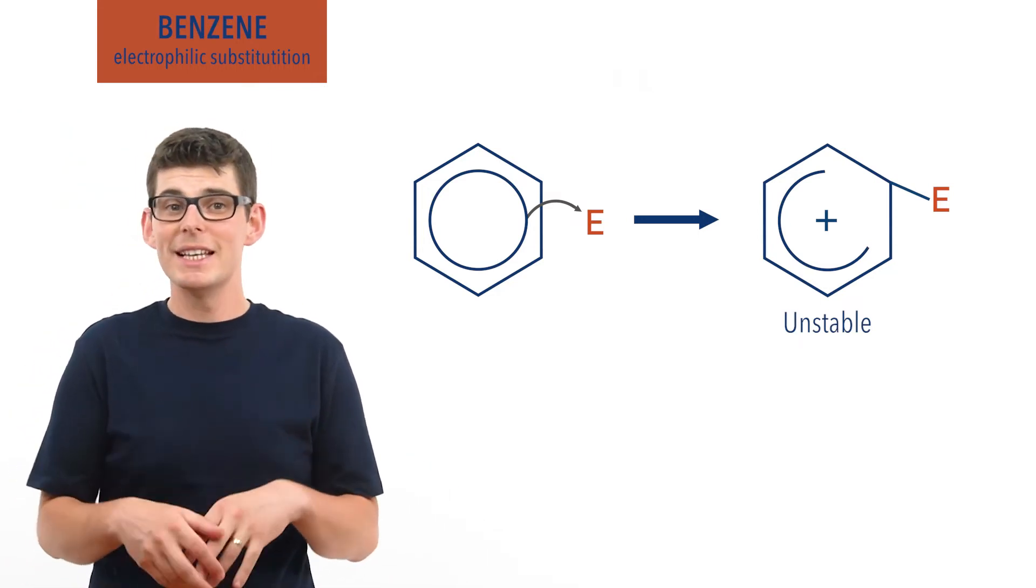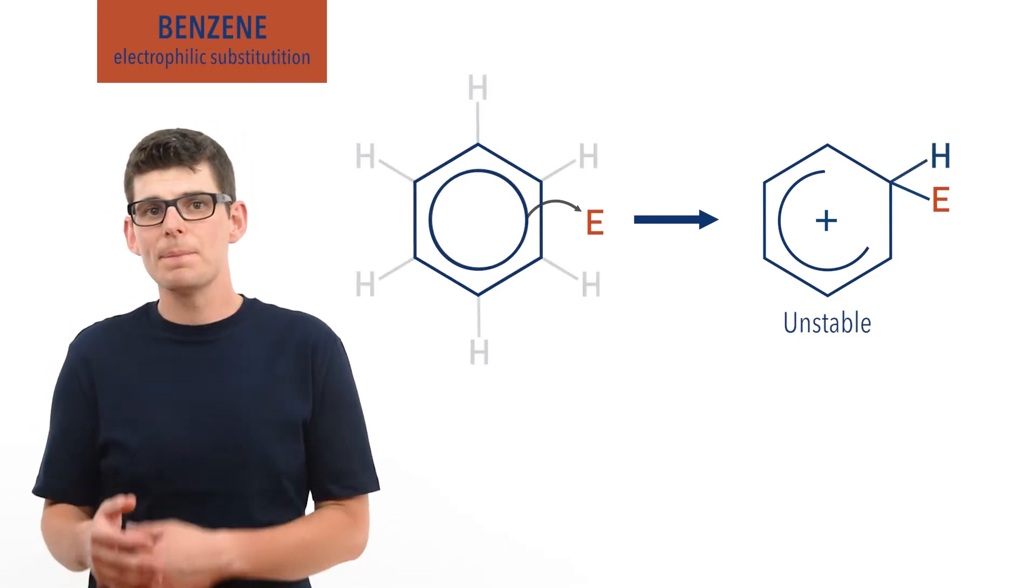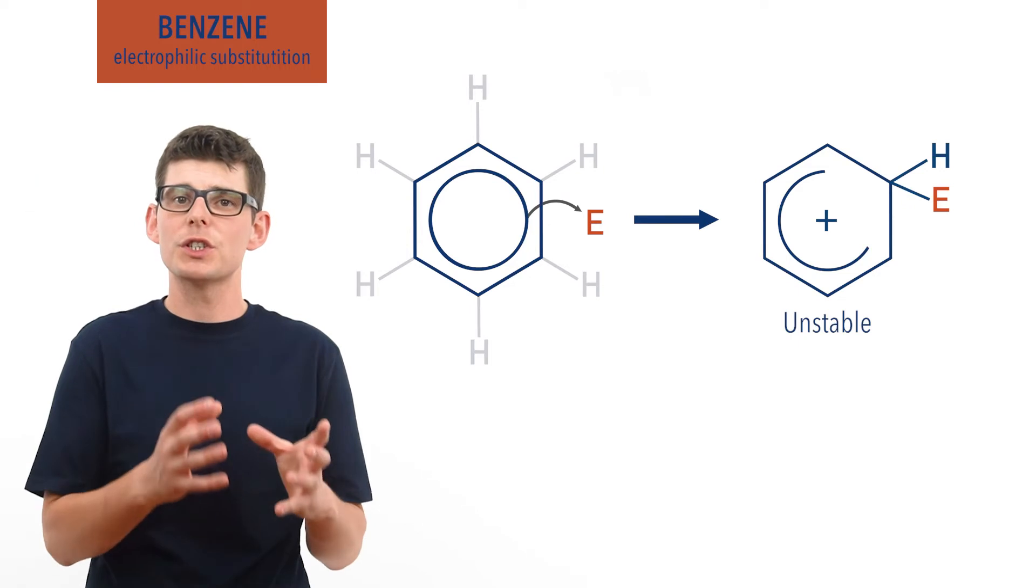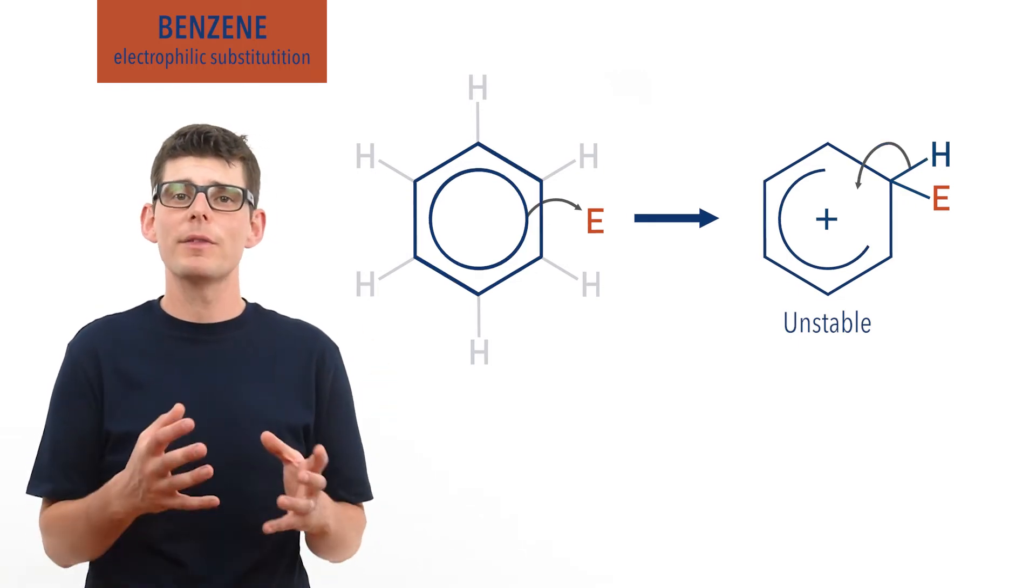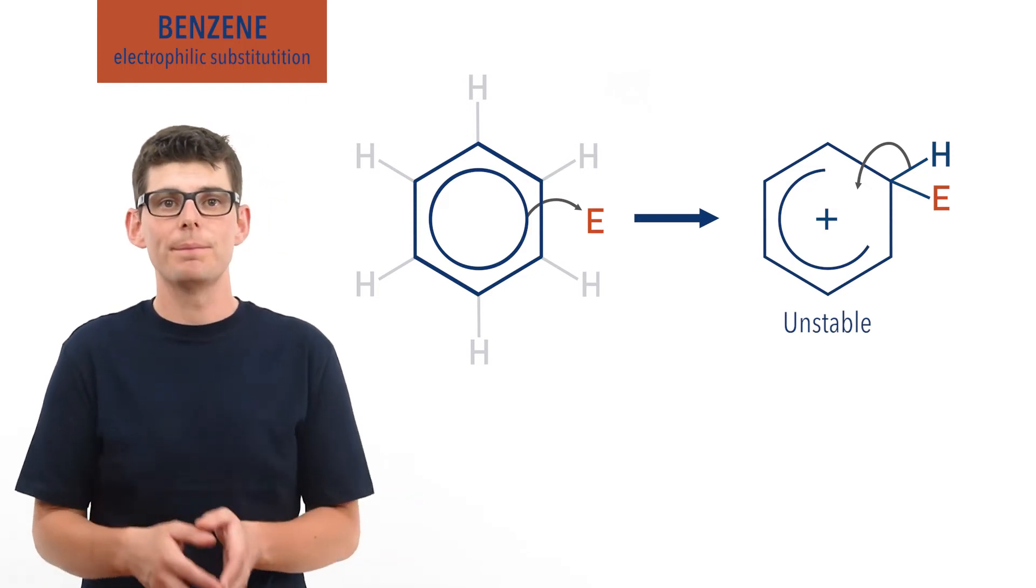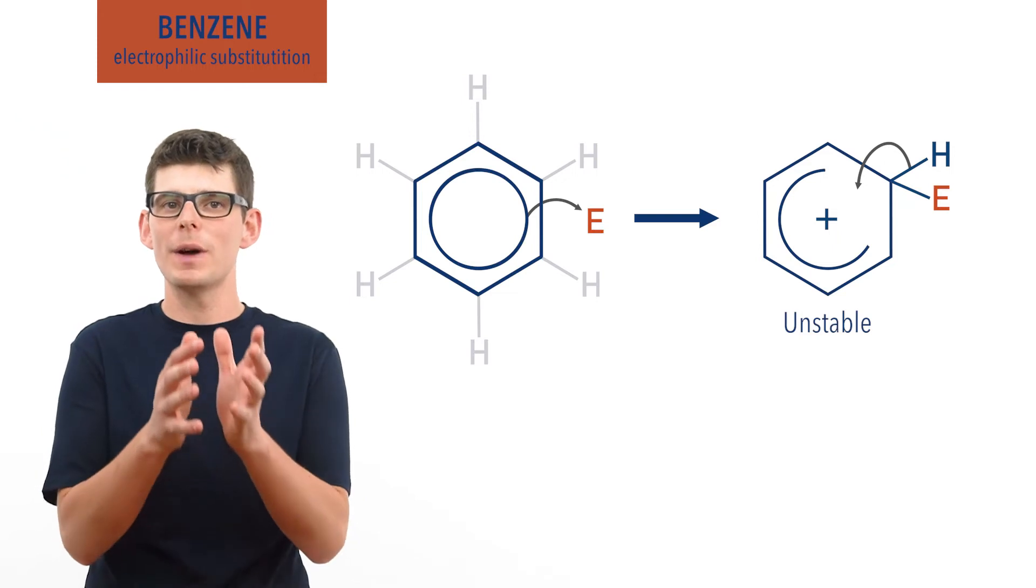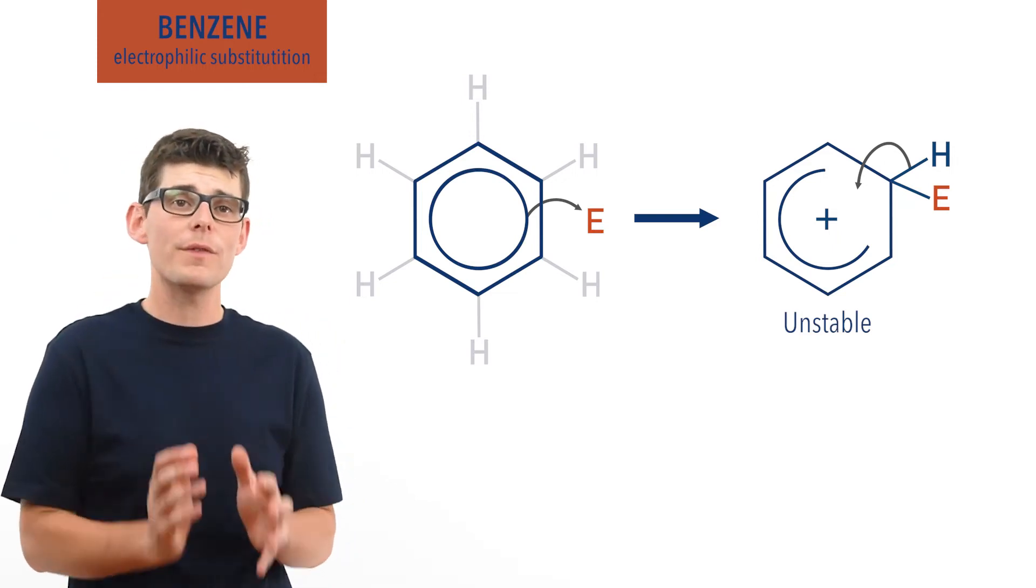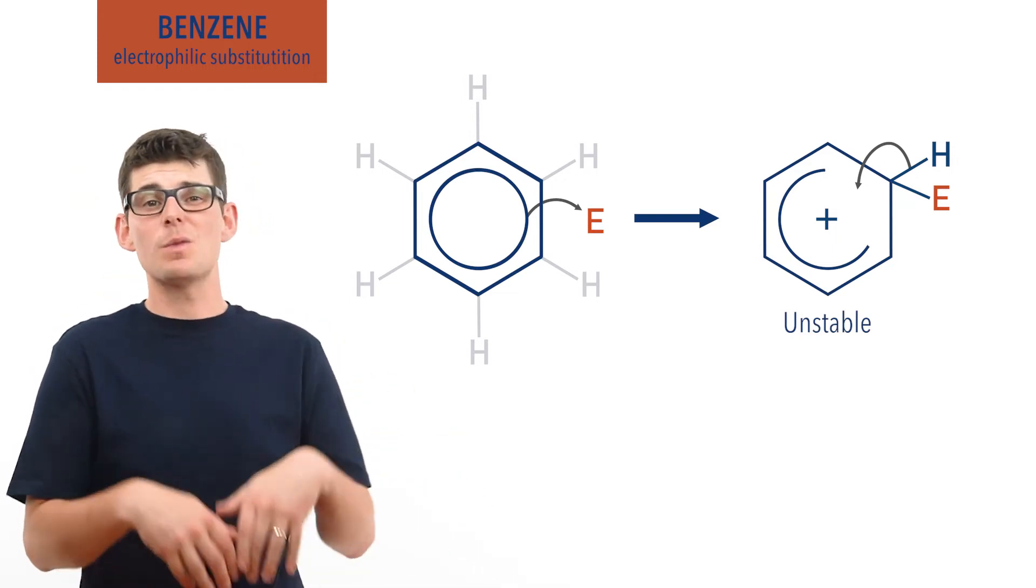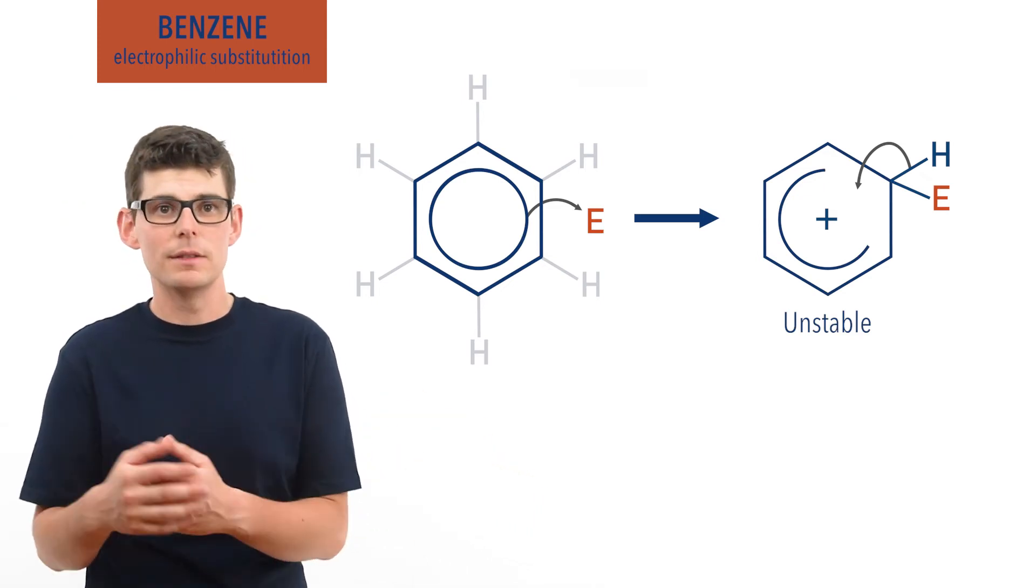Remember in benzene that each carbon atom is also bonded to a hydrogen atom. This carbon-hydrogen bond can be broken to free up a pair of electrons that can be used to restore the delocalized electron system to its former glory. It is this step that forces the mechanism to follow a substitution rather than an addition reaction, which is what normally happens for electrophiles with unsaturated hydrocarbons like alkenes.